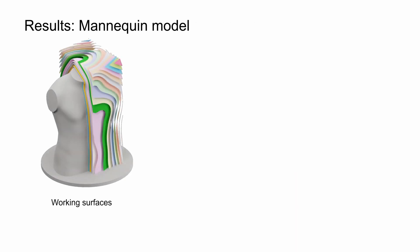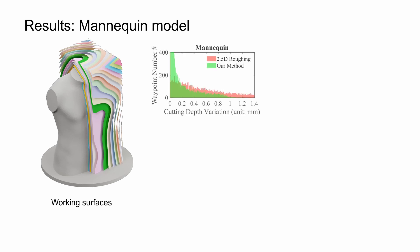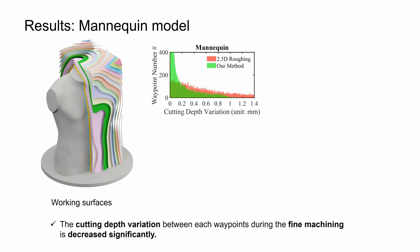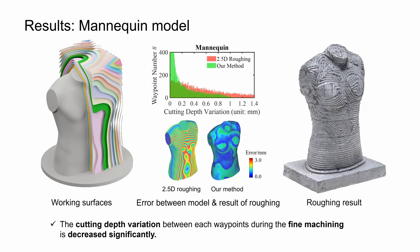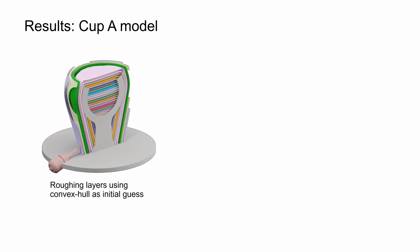Here we present the layers for the mannequin model. The cutting depth variation during finishing shows significant improvement in our case. Also notice that our method produces output very close to that of the target model. We also present the result of the rough machining. In this example, we show how the ability to modify the layer shapes can help in the prevention of collision during roughing.